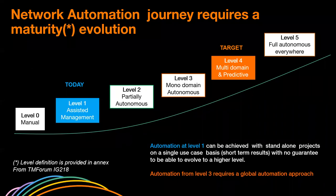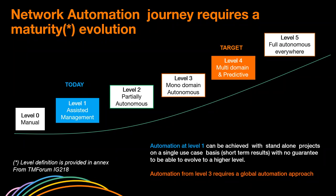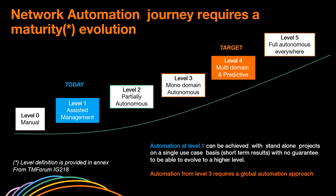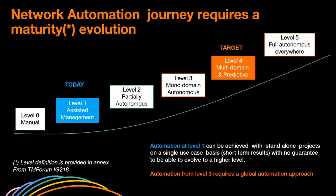Level one is assisted management — pieces of technical automation performed in some locations of the network; this is globally the situation today. At level two, we start implementing closed loops with partially autonomous networks based on predefined events, rules, and actions. At level three, we have more autonomy in decision-making for a specific networking domain, adapting decisions to global awareness of that domain. At level four, we have multi-domain awareness — for instance, driving the IP layer according to events from the transmission network — and we introduce more predictivity.